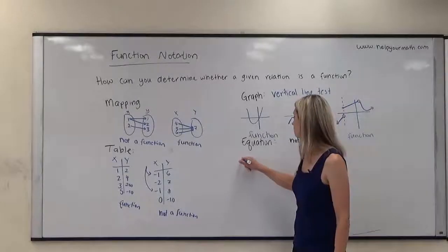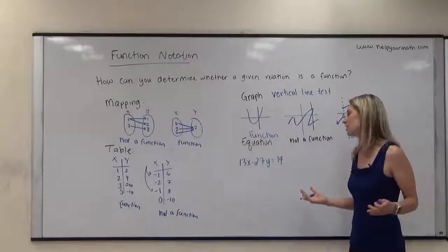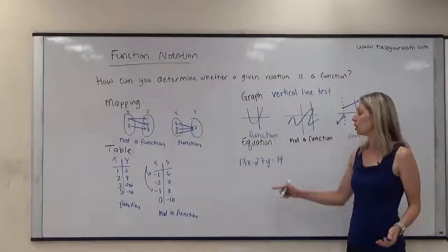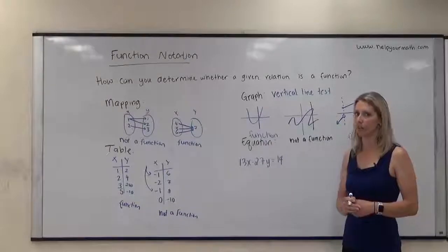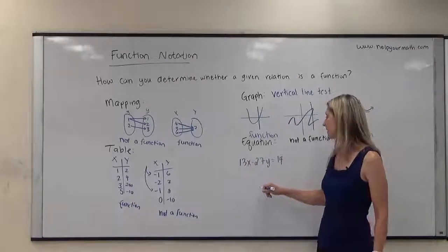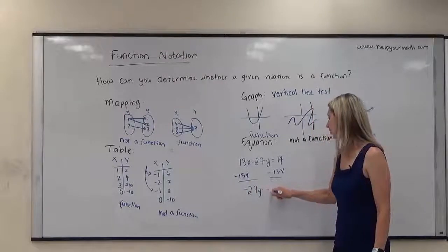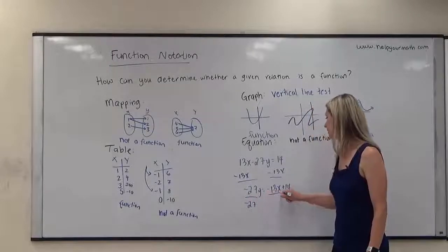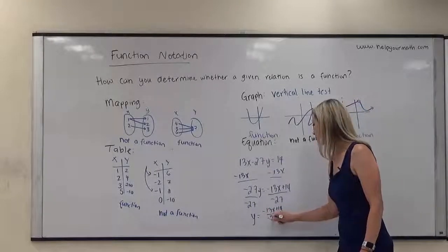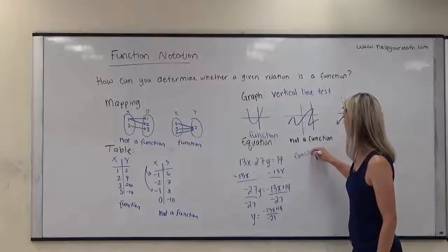For example, if I have 13x minus 27y equals 14, I can pretty easily get y by itself — I subtract 13x from both sides and divide both sides by negative 27. You might also recognize that this is a slanted line, and all slanted lines are functions. So I'd have negative 27y equals negative 13x plus 14, then divide by negative 27. It's a linear equation, and all linear equations are functions except for vertical lines. So this is a function.